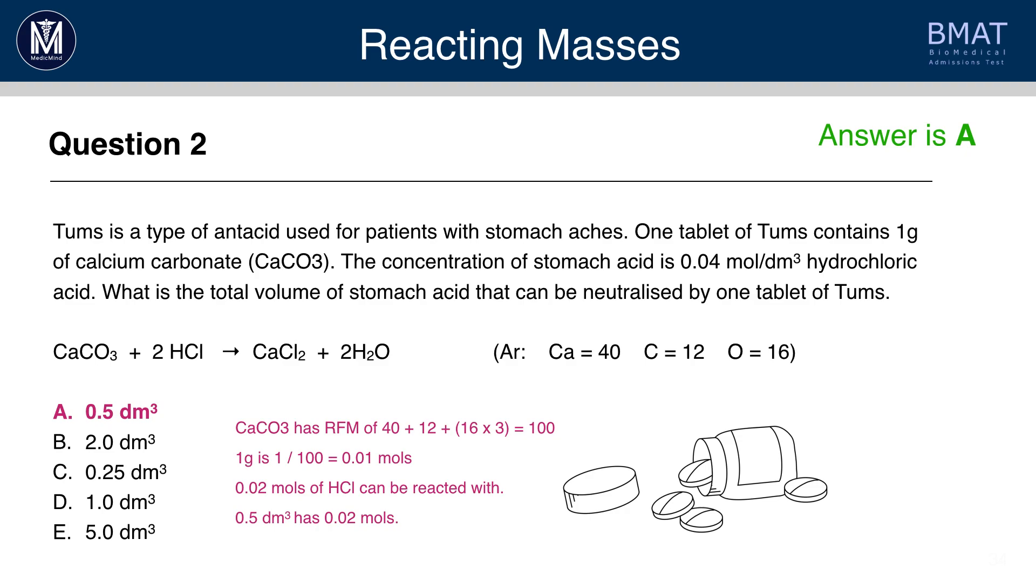The answer here is A. So, first of all, we know that there's 1 gram of calcium carbonate in one tablet of Tums. So, we have to work out the relative formula mass of calcium carbonate. We can work this out to be 100. 1 gram is, therefore, 0.01 moles.